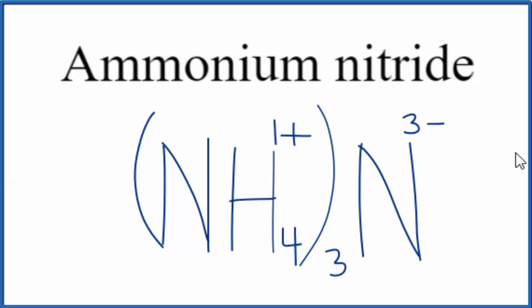We remove these symbols here. So this is the formula for ammonium nitride (NH4)3N. And this is Dr. B. Thanks for watching.